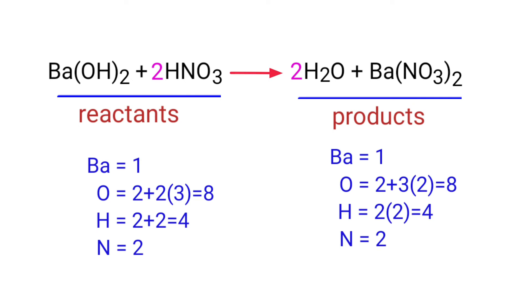There are 1 barium atom, 8 oxygen atoms, 4 hydrogen atoms, and 2 nitrogen atoms on both sides.